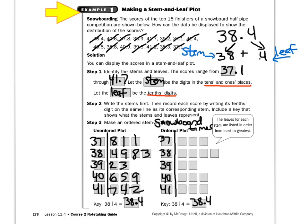Now let me go back to my pointer. See that the stem is organized because we wrote it: 37, 38, 39, 40, 41. But see all the leaves? They're out of order and we have to organize them — this is not the answer yet. So we just put these numbers in order from least to greatest. So rather than writing 8, 1, 1, I'm going to write 1, 1, and then 8. And for 4, 9, 8, 3, I would put 3 first, then 4, then 8, then 9.